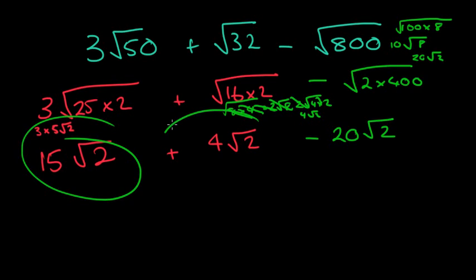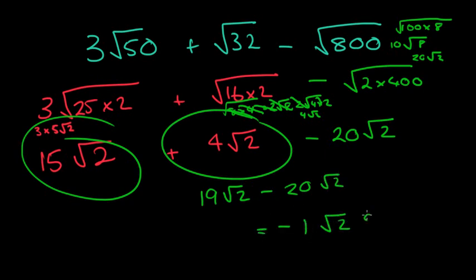Let's simplify. 15 root 2 plus 4 root 2 is 19 root 2, take away the 20 root 2, we're left with a negative 1 root 2, or just negative root 2. Probably that's the most challenging question you'll get.